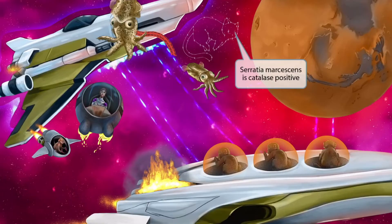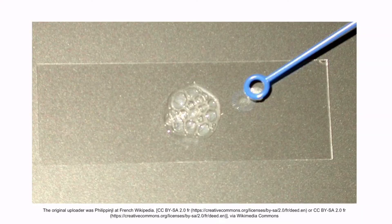Now notice that we've shown a cat constellation right next to Mars. This is here to help you remember that Serratia is catalase positive. This is a picture demonstrating the catalase test, which we covered in more detail in section 7, our video on Listeria. Recall that the bubbles indicate that the organism is catalase positive.